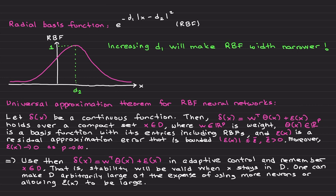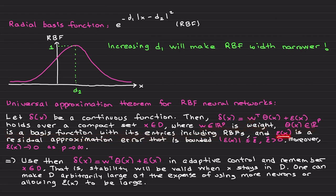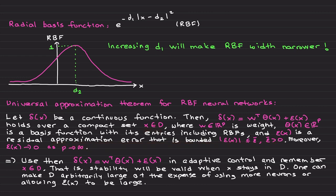One of the most important key moments of this video is the universal approximation theorem for radial basis function neural networks. Radial basis function neural networks with a single hidden layer have the following property: let delta be a continuous uncertainty function. Then this approximation holds over a compact set — x belongs to D — where w is an unknown weight vector, theta is a basis function whose entries include radial basis functions, and epsilon is a residual approximation error that is bounded over the compact set D. Moreover, epsilon goes to zero as you increase the number of neurons.